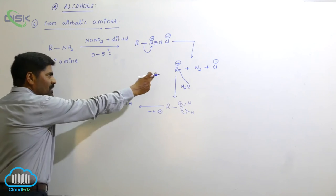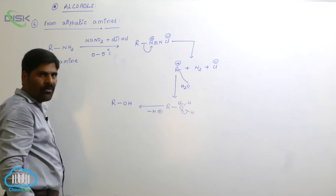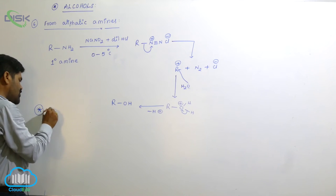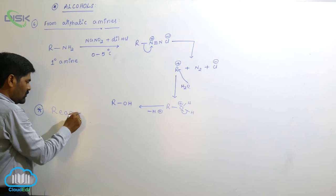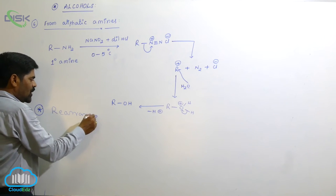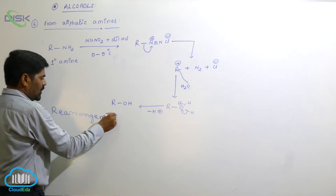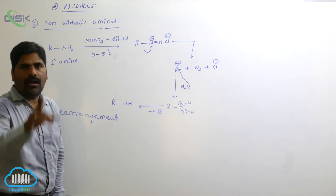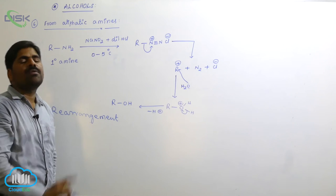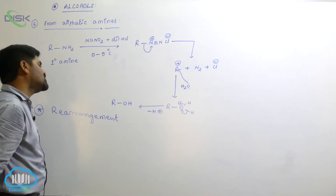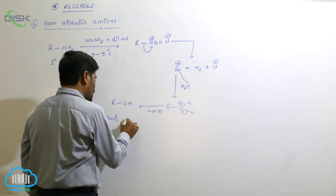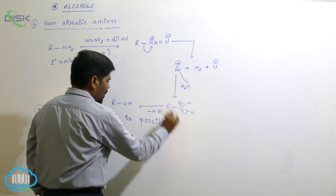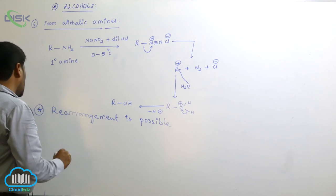The carbocation R⁺ reacts with water (already present in the reagent) and loses H⁺ to form an alcohol. Due to formation of a carbocation intermediate, rearrangement is possible in this reaction.